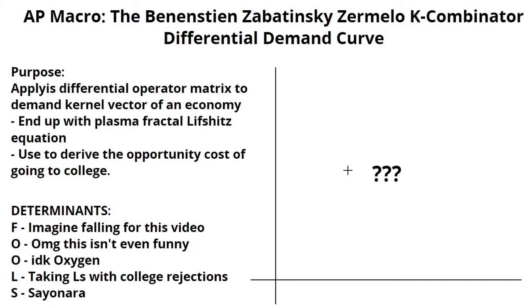Hey guys, GPAJesus here. This is the most important video on this channel — the most important concept in all of AP Macroeconomics. It appears in every AP exam, and it's the difference between a 4 and a 5.